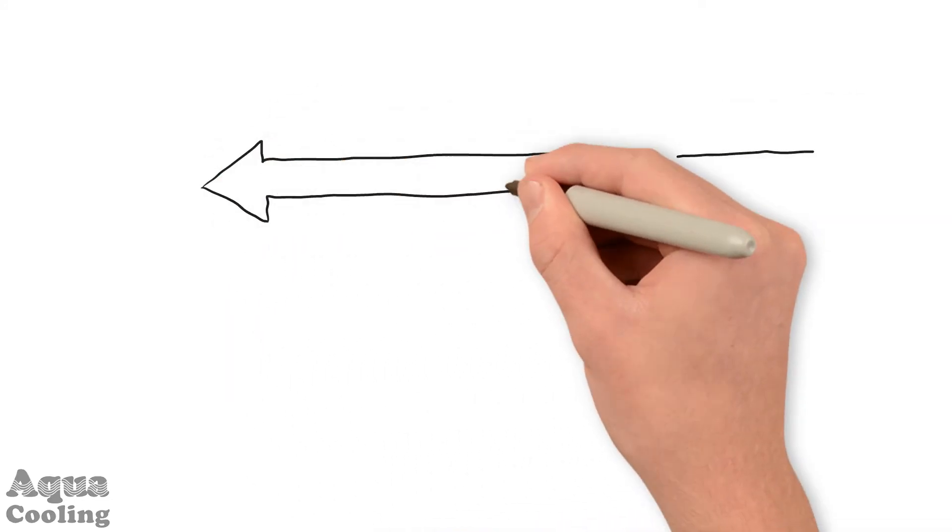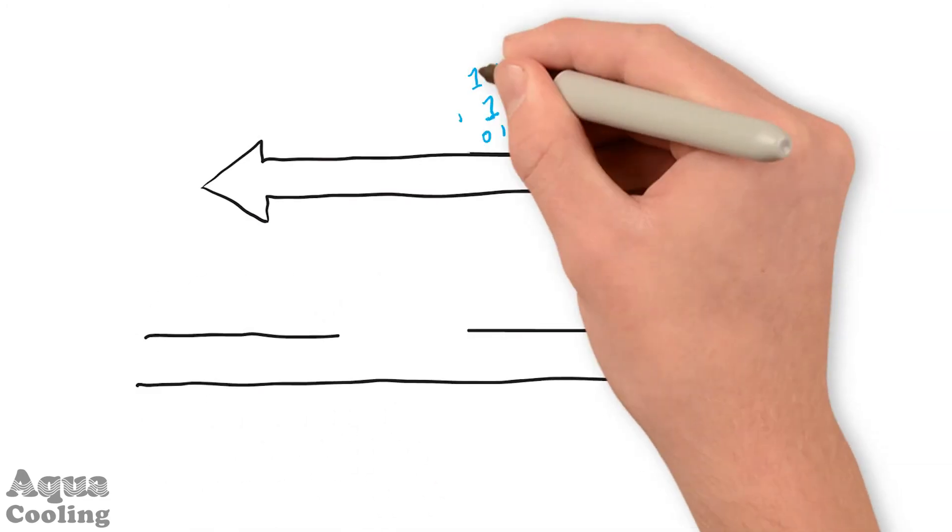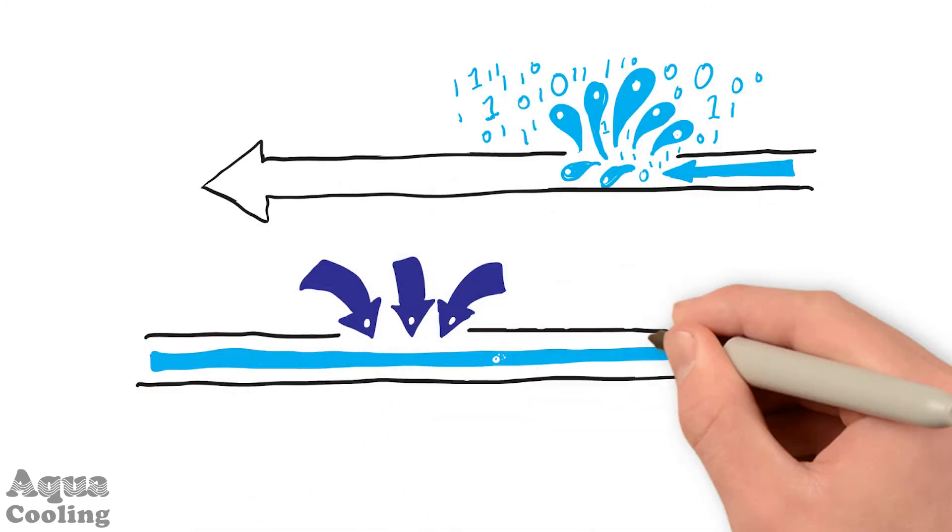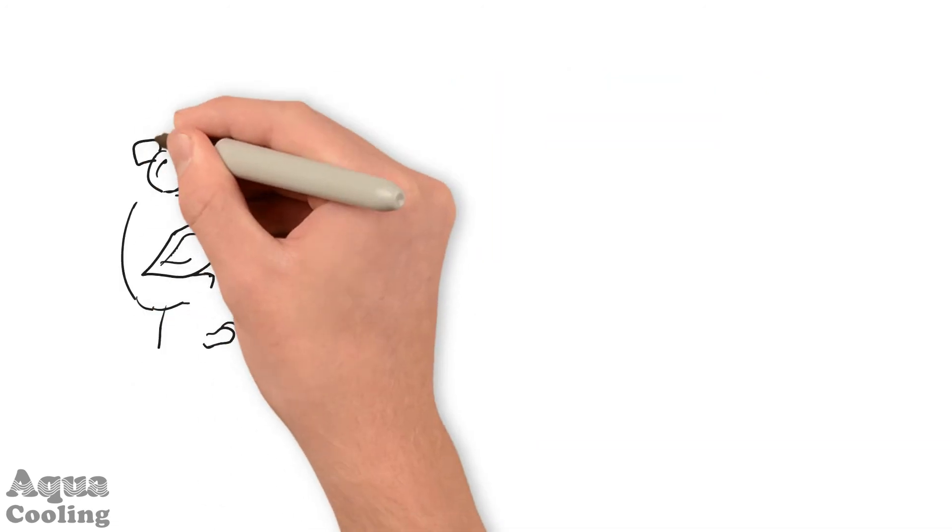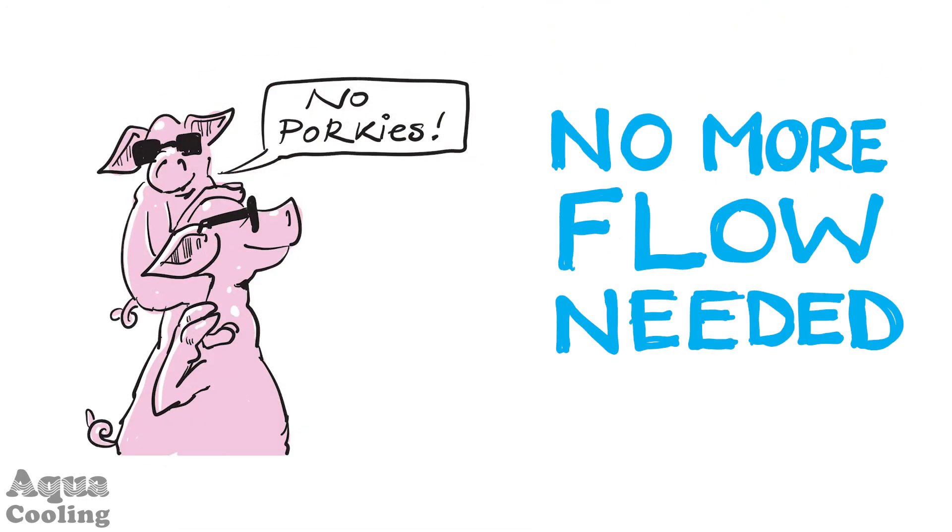And by using our guaranteed leak prevention system, not only can we keep your equipment and data safe from water damage if the worst were to happen, we can also piggyback the extra cooling off your existing system in such a way that it doesn't need any more flow.